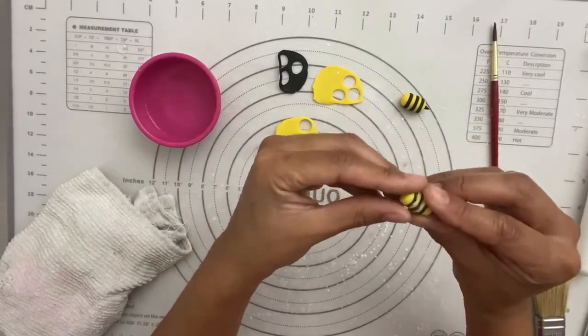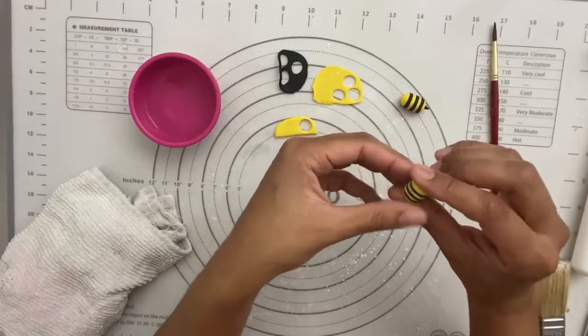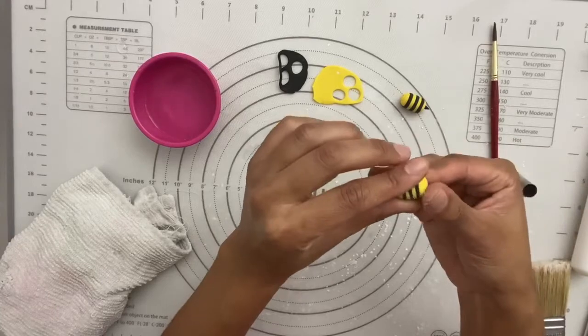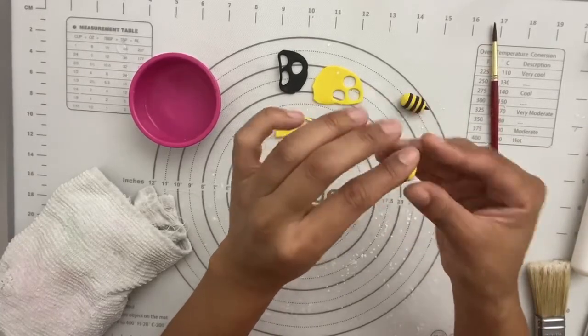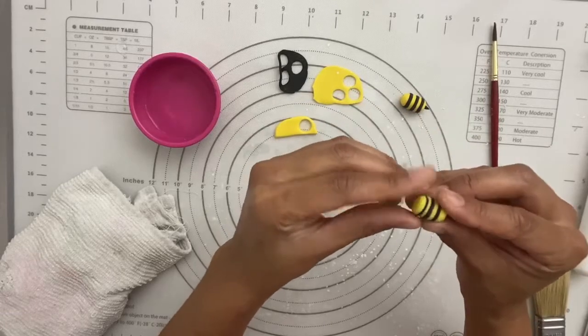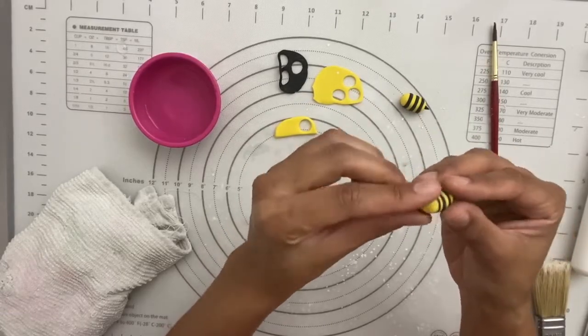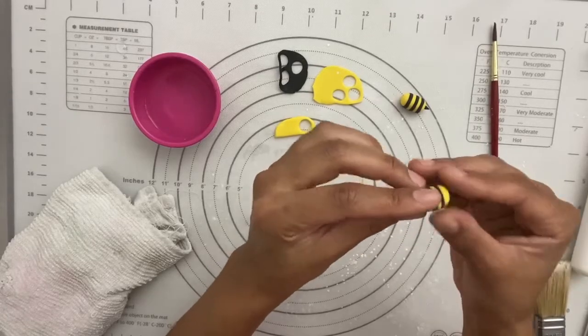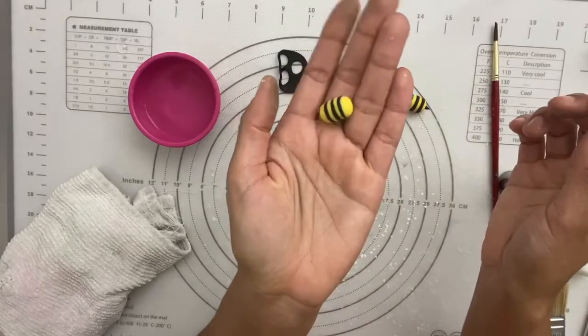And so now all you have to do is sort of compress it this way. You don't want to go too much to where you lose your stripes, but just so that they're sandwiched together and nice and stuck together. And then all you have to do from there is just roll the edges a little bit. So you're rounding out the ends of his face and his little bum. And that's it till you get this little pill shape. There's your bee.